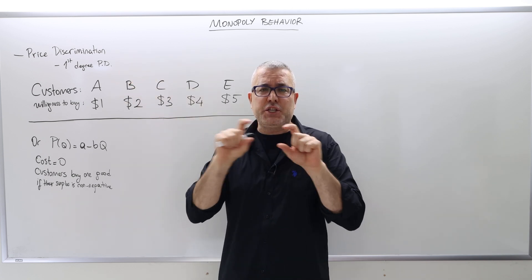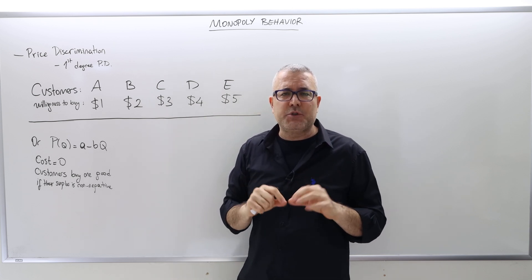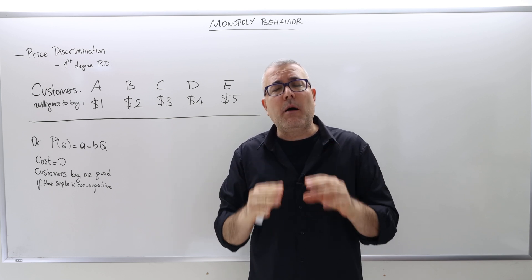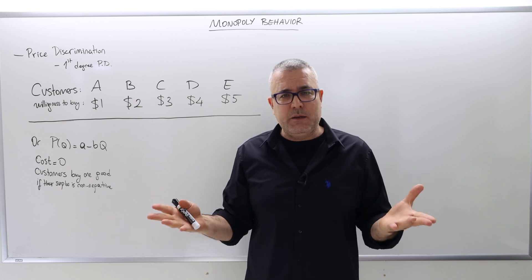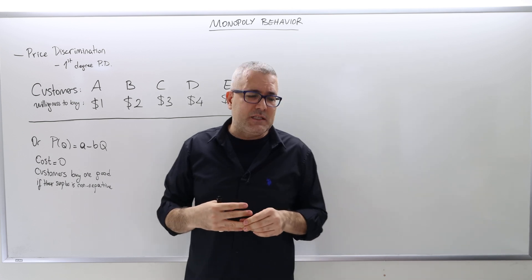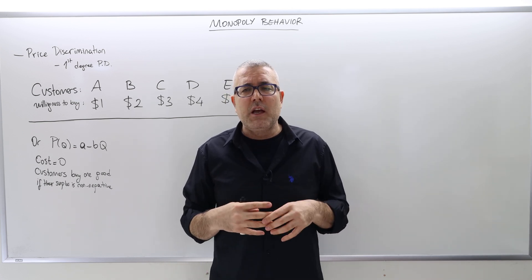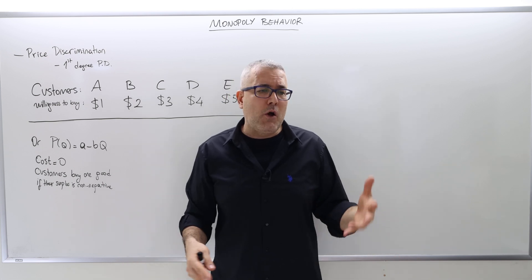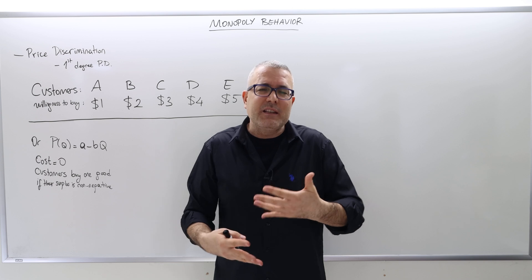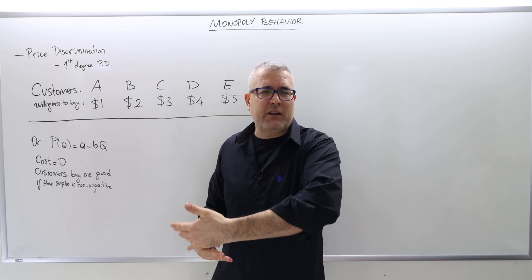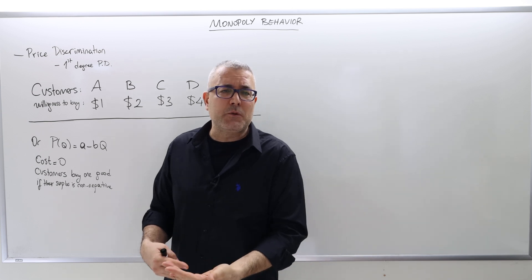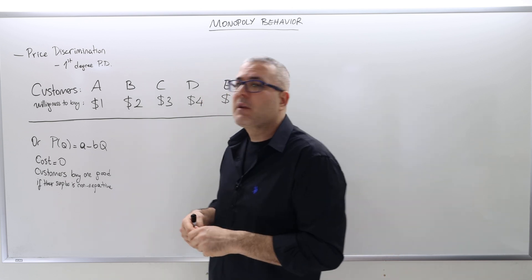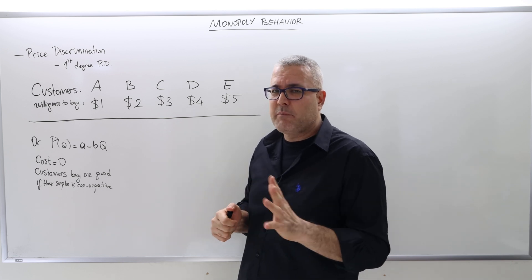In the first-degree price discrimination model, the standard assumption is that the monopolist knows each customer and how much each customer is willing to pay. Obviously this is a very strong assumption, and in reality it's nearly impossible. The standard textbook example is a doctor in a small village who grew up there, knows everyone since childhood, knows who makes how much money, and can pretty accurately estimate each household's willingness to pay — and so charge different prices for their service.